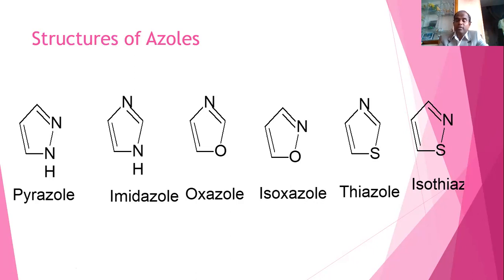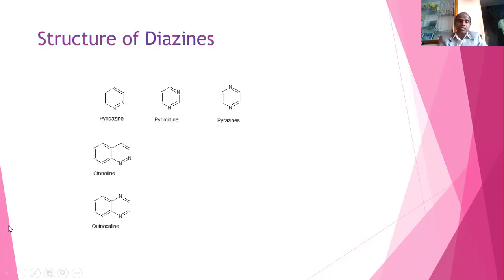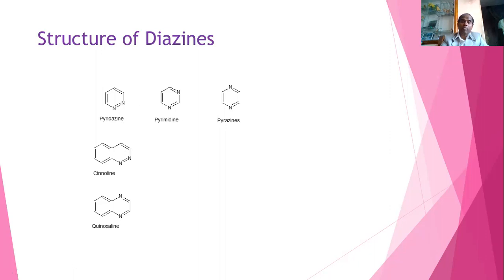The diazines are 6-membered rings with two nitrogens. When the two nitrogens are adjacent, it is called pyridazine. When at the first and third positions, it is pyrimidine. When at the first and fourth positions, it is pyrazine. The benzo-derivative of pyridazine is cinnoline, of pyrimidine is quinazoline, and of pyrazine is quinoxaline — which has applications in anti-hypertensive drugs. I will discuss synthesis of pyrimidine, cinnoline, and quinoxaline.